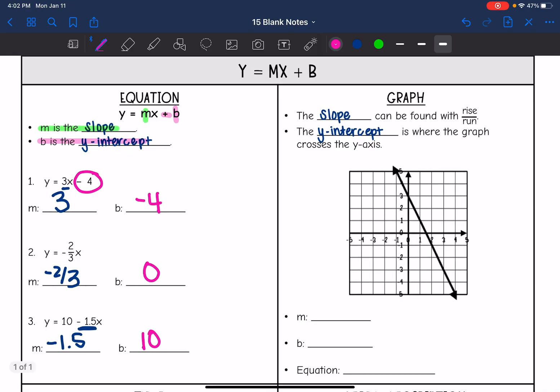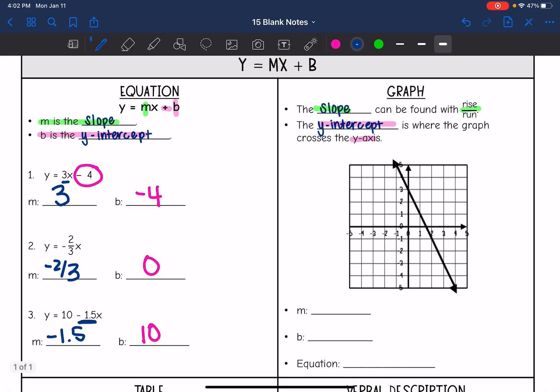Now let's look at graphs. Remember, the slope can be found on a graph by doing rise over run. And then the y intercept on a graph is where we cross the y axis. So let's write the equation for this graph.